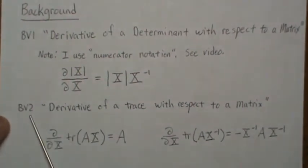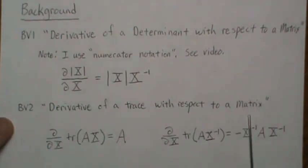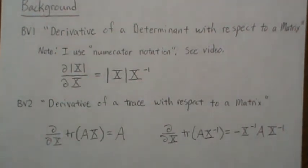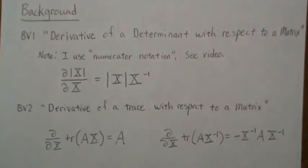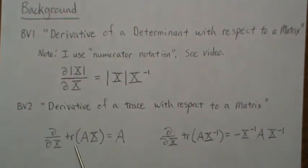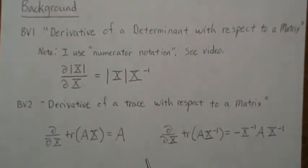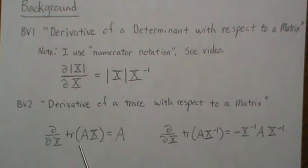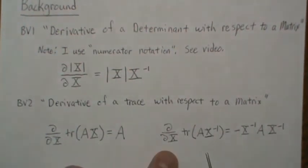And then background video two, I'm going to call derivative of a trace with respect to a matrix. And there I derive these two results, and actually in both of these videos, there's more than just these results. But these are the results we're going to use in this video. So the derivative of a trace of A times x with respect to the matrix x is just A. The derivative of the trace of A x inverse with respect to x is minus x inverse A x inverse.